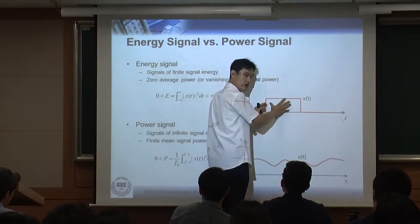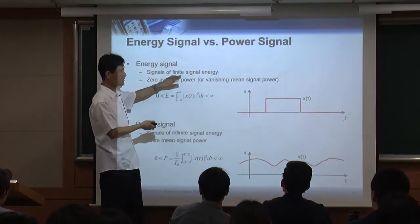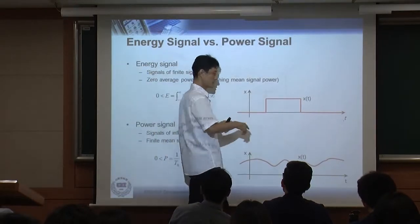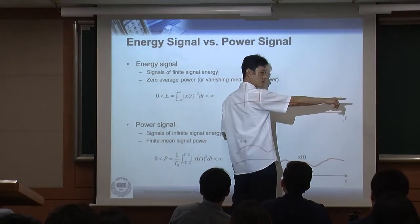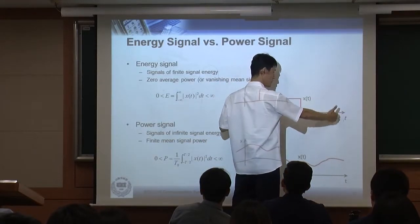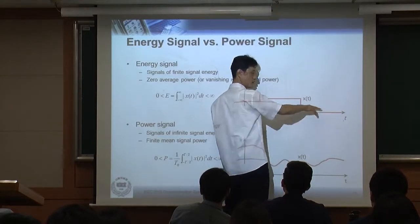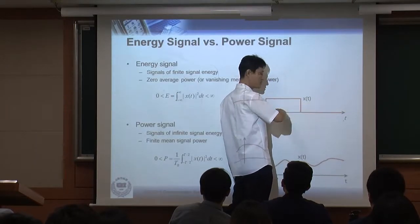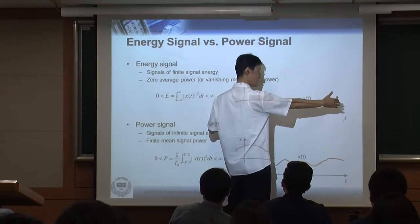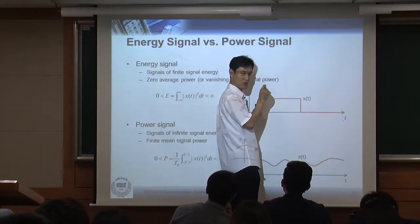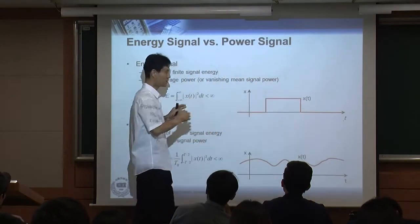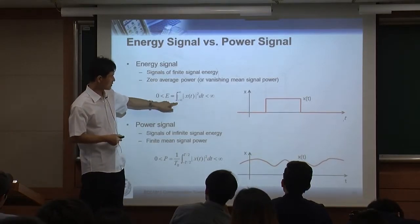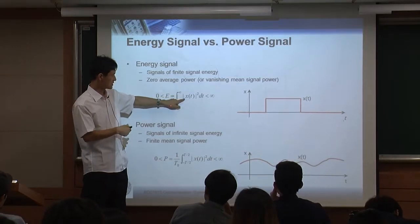An energy signal has zero average power. Because the signal goes over infinite time, when you average the power over the whole infinite duration, it becomes zero. The energy is only in that limited interval, so when you integrate over infinite time the average becomes zero. The definition of energy is the integral from minus infinity to infinity of the signal squared.